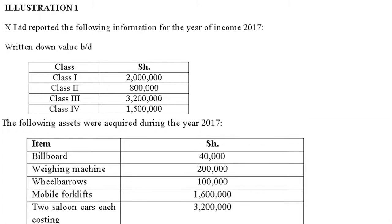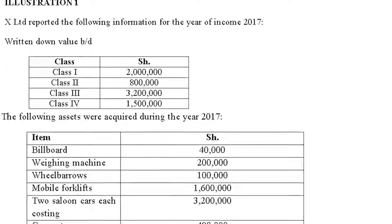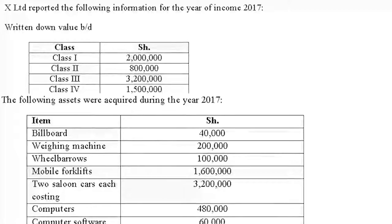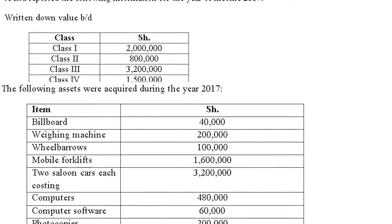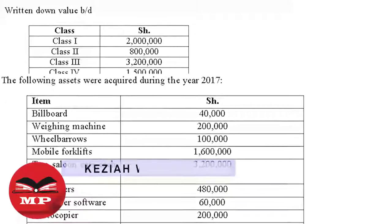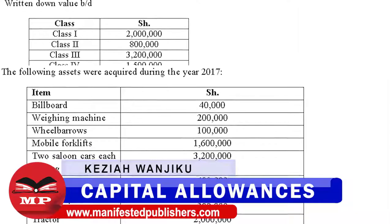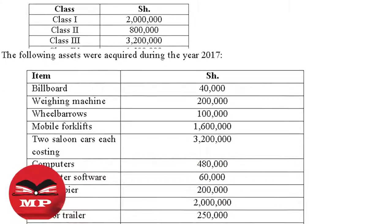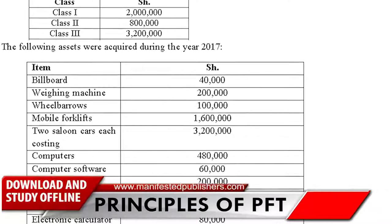Wheelbarrows are non-self-propelling, so they go to Class 4. The mobile forklift is mobile and self-propelling, so it goes to Class 1. For the two saloon cars at 3.2 million each: saloon cars are non-commercial vehicles in Class 3, and the cost for addition is restricted to 2 million per vehicle. So although each costs 3.2 million, we take 2 million times 2 vehicles, giving 4 million.